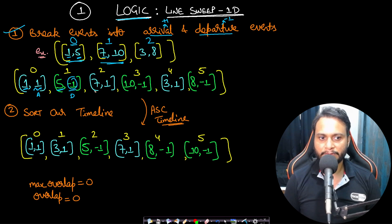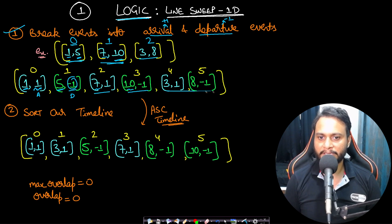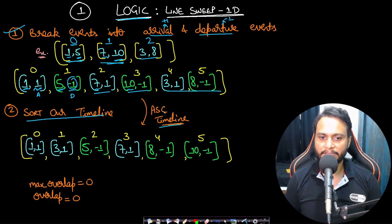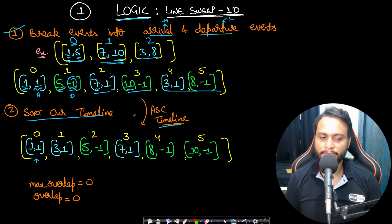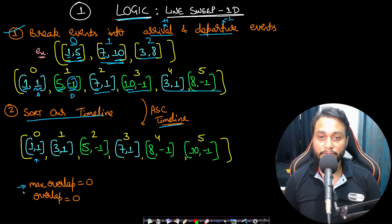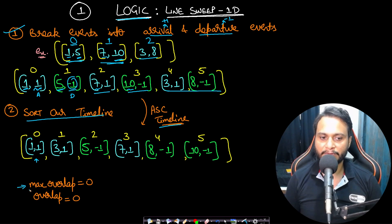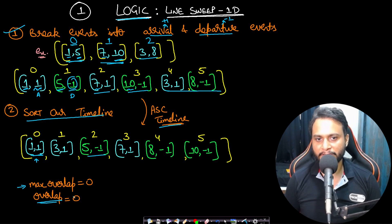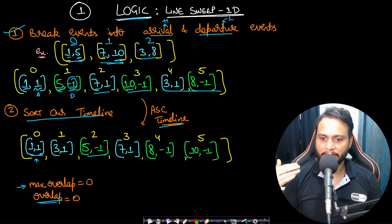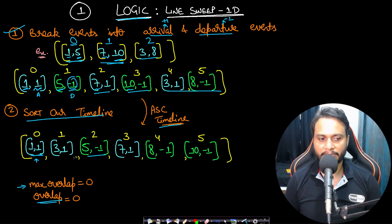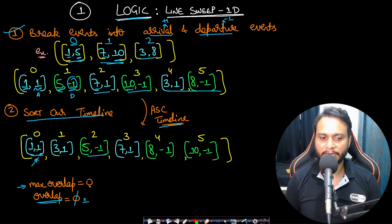For interval [7,10], we get events (7, +1) and (10, -1). For [3,8] we get (3, +1) and (8+1=9, -1) — note the end is made exclusive. After creating all events, sort them in ascending order by time so we can process from left to right. I maintain a max_overlap variable and an overlap counter: on an arrival event, increment overlap; on a departure event, decrement overlap. Then max_overlap is updated to whichever is larger.